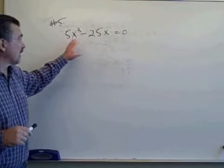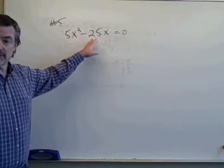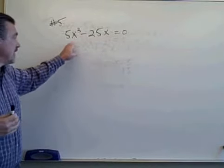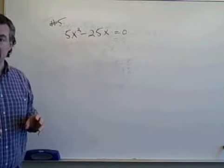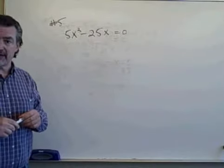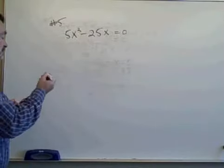And in this case, when I look at the numbers, both of those numbers have 5 as a factor, and both terms have x to the first power at least as a factor. So I can factor out 5x.